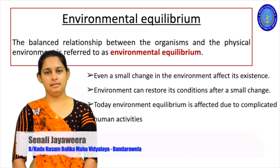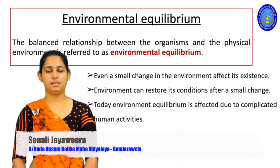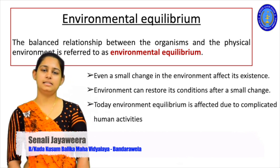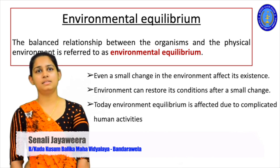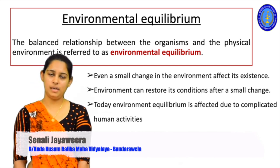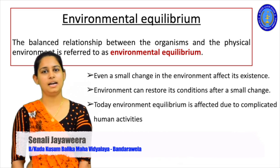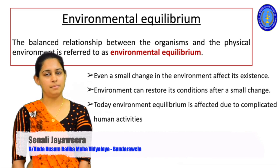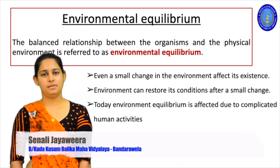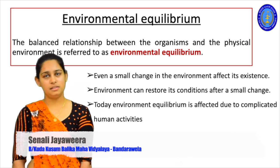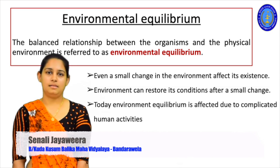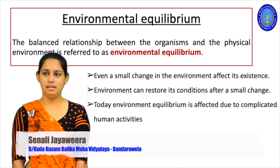But the environment can maintain an equilibrium among those components. That means a balanced relationship is established between organisms and the physical environment or physical components — that is known as environmental equilibrium. I think you know the meaning of equilibrium; simply, equilibrium means balance. In other words we can say ecological balance. So environmental equilibrium means the balanced relationship between organisms and the physical component.